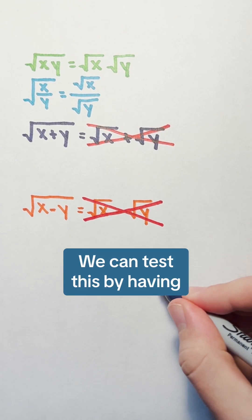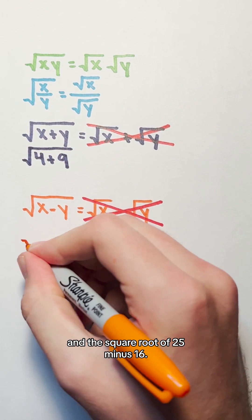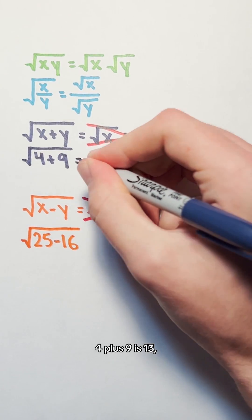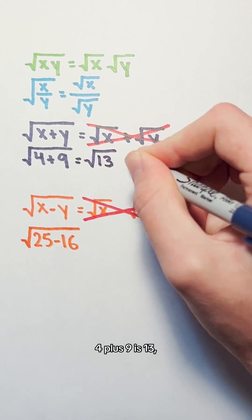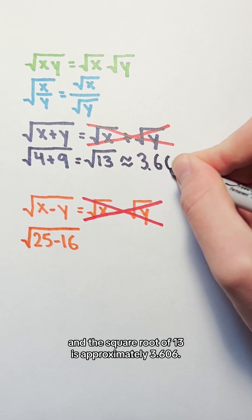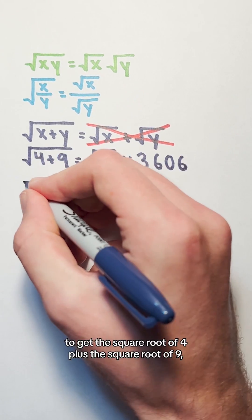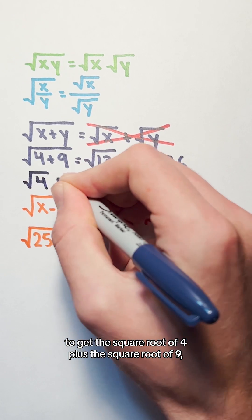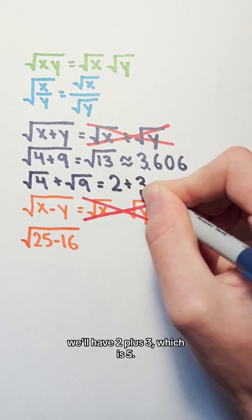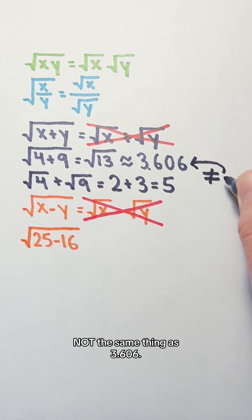We can test this by having the square root of 4 plus 9 and the square root of 25 minus 16. 4 plus 9 is 13, and the square root of 13 is approximately 3.606. If we separate the 4 and 9 to get the square root of 4 plus the square root of 9, we will have 2 plus 3, which is 5. Not the same thing as 3.606.